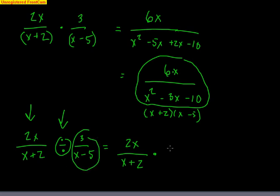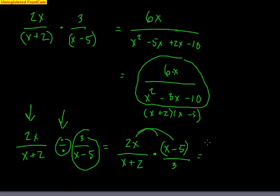Then of course you multiply — but be careful, this is a binomial, so I've got to distribute. So I get 2x squared minus 10x on top. On the bottom, again this is a binomial, so I get 3x plus 6.